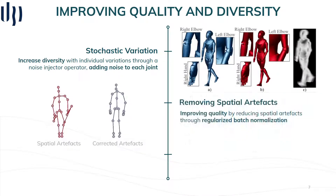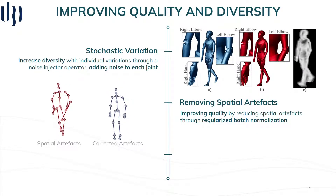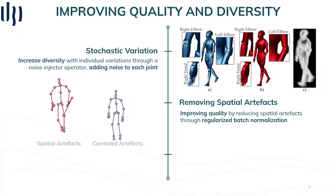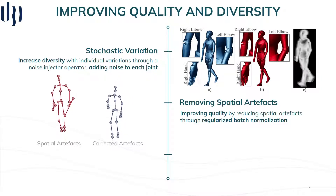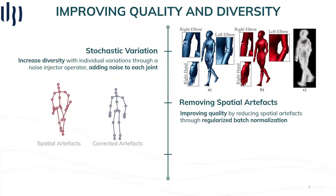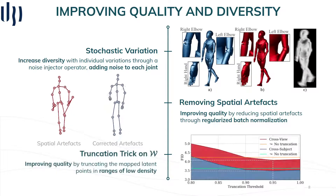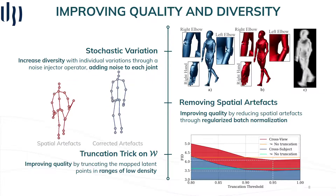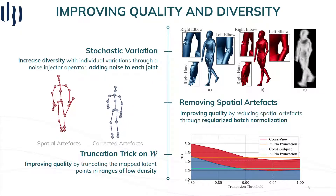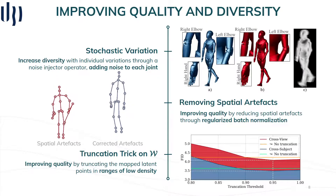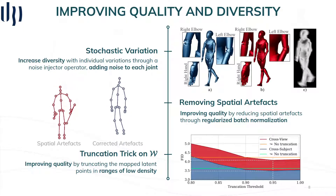However, the occurrence of special artifacts was observed when quality and diversity were increased, so we solved that problem with a regularized use of batch normalization, justified by the fact that feature map normalization omits any information about individual feature magnitude, becoming unnoticed by the discriminator. Finally, since the latent space is sampled from a distribution and mapped to an intermediate latent space, ranges of low density in the training data become difficult to learn for the generator, so we improve quality by truncating those ranges during inference time.